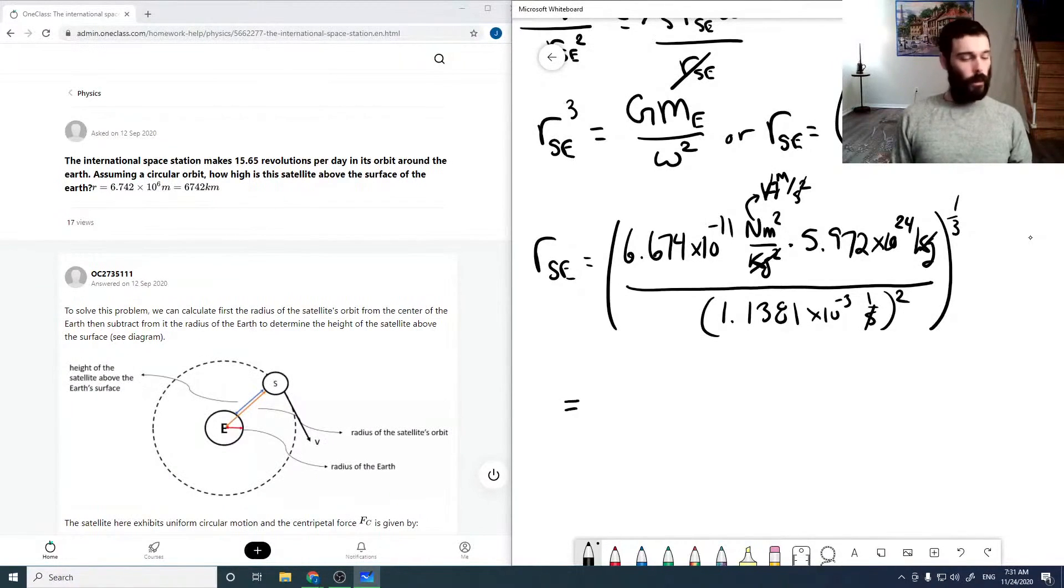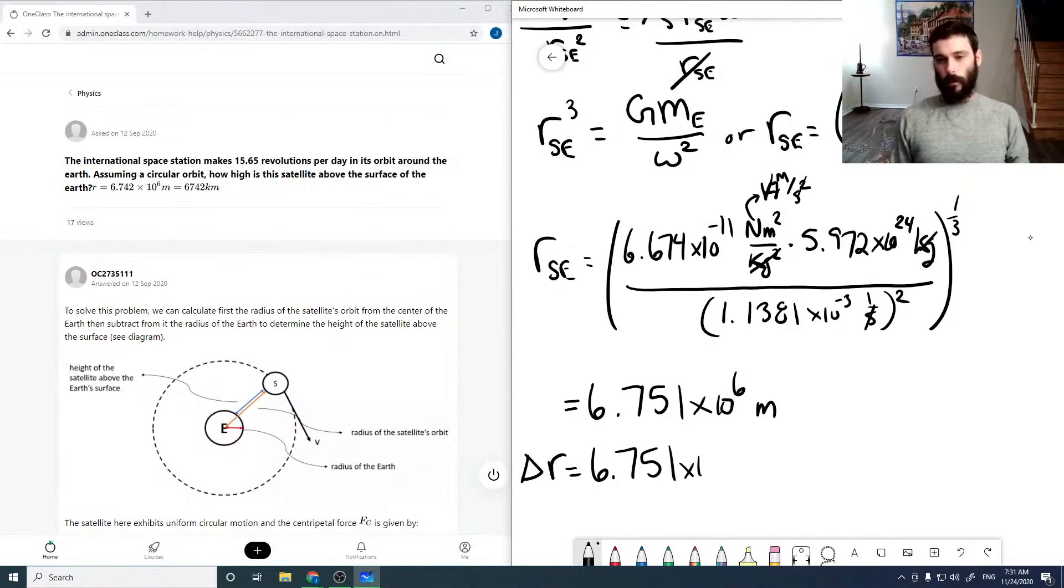So putting this all through our calculator, we get 6.751 times 10 to the 6 meters. So that's our radius from the center of the Earth. So it wants how far above the Earth's surface we are.